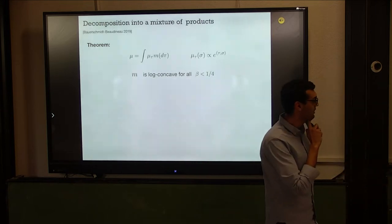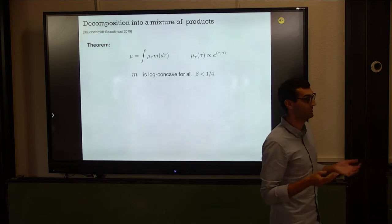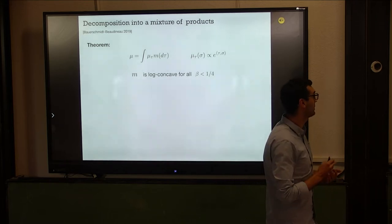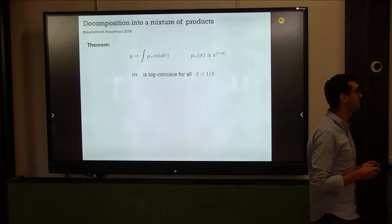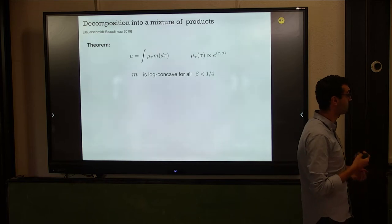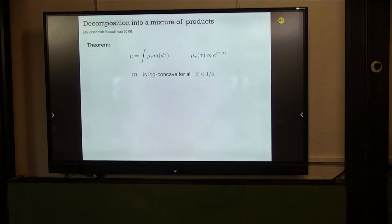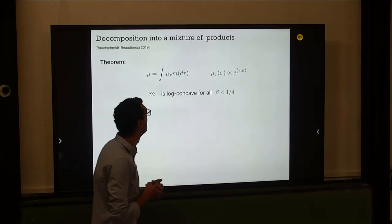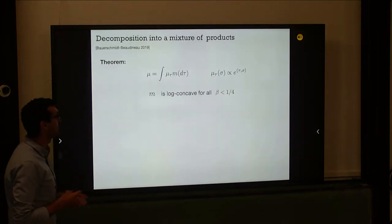I want to change gears and talk about other ways of doing sampling. The first one is a very nice observation by Bauer-Schmidt and Bodino that produces a decomposition of the measure mu into a mixture of product measures. The theorem says you can decompose the SK measure in this form, where the measures mu are really just product measures — just external fields — and the external field is drawn from a mixing measure M that is itself log concave.